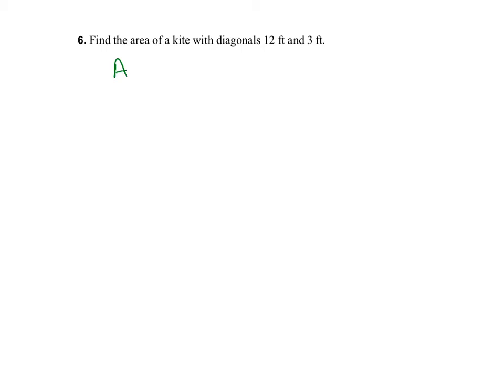Find the area of a kite with diagonals 12 feet and 3 feet. The area of a kite is one-half of the product of the diagonals, so it's one-half of 12 times 3, which equals 18 square feet.